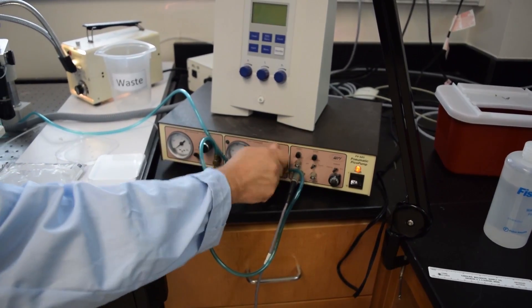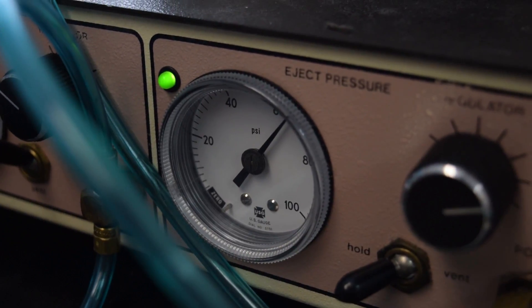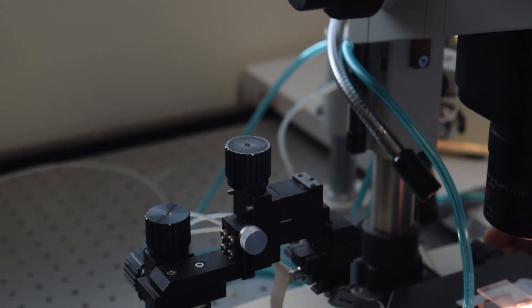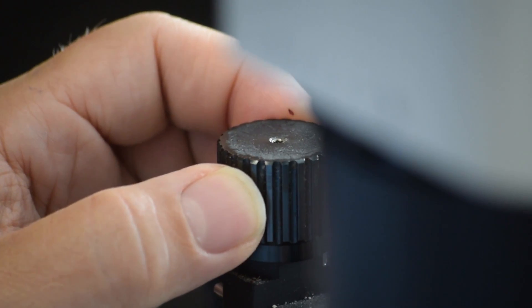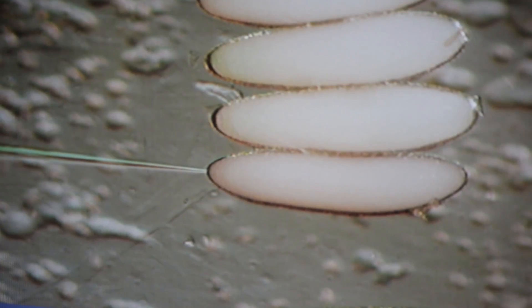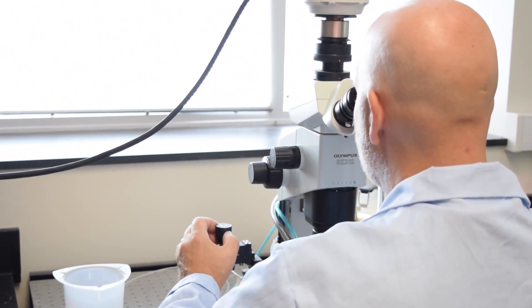During insect transformation, the biggest hurdle is getting material into the embryo. We have a controller for air pressure so that we can push air into the needle, which forces the DNA material to come out through the tip. And we'll bring this needle in, pop it in, and it doesn't take a lot of the injection material in order to create transgenic insects.